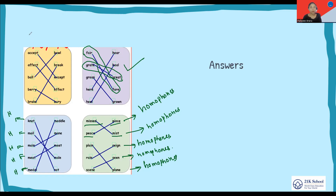Now we are able to identify which are the near homophones in this list. The near homophones used in this worksheet are 'accept' and 'except,' and 'affect' and 'effect.' These are the only two near homophone pairs used here.